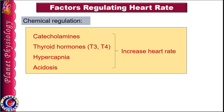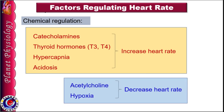Regarding chemical regulation of heart rate: catecholamines, thyroid hormones, hypercapnia and acidosis increase heart rate, whereas acetylcholine and hypoxia decrease heart rate and hence cardiac output.